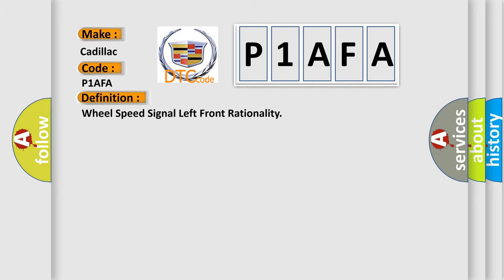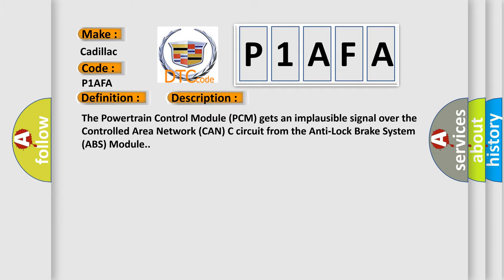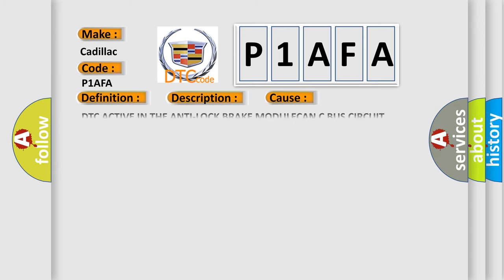The basic definition is Wheel Speed Signal Left Front Rationality. And now this is a short description of this DTC code. The powertrain control module PCM gets an implausible signal over the controlled area network CAN-C circuit from the anti-lock brake system ABS module. This diagnostic error occurs most often in these cases.